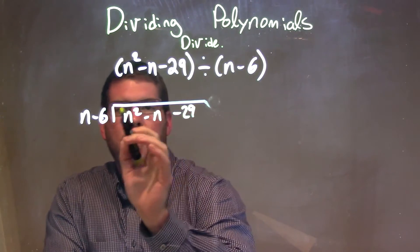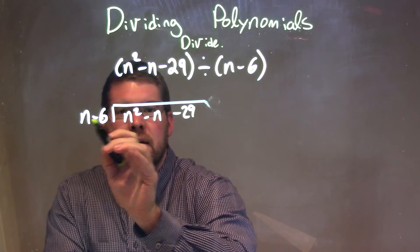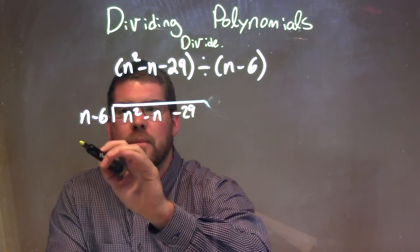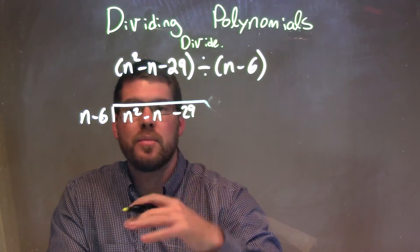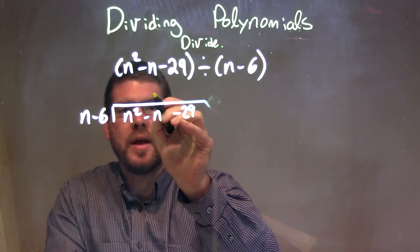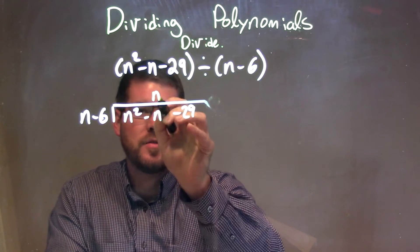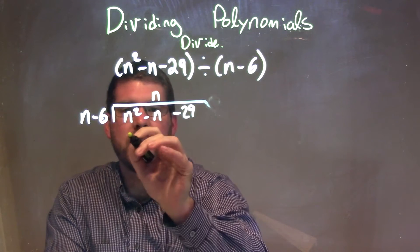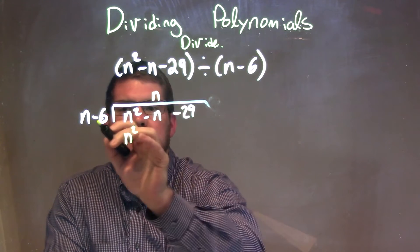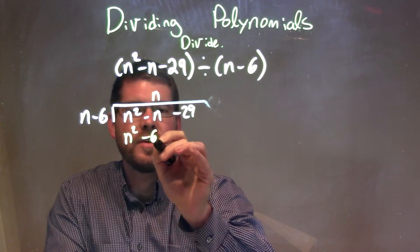So I'm going to ask the question: what times n gives me n squared? Pretty simple, that's just an n, right? n times n is n squared, so I'm going to put n over my n value right there to keep it in line. n times n is n squared, then n times minus 6 is minus 6n.